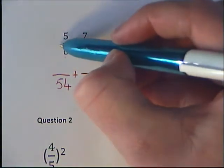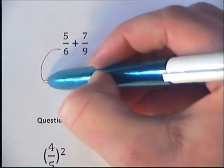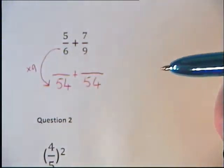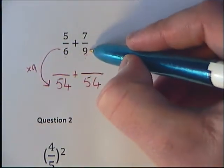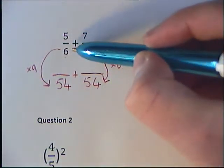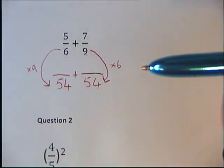And then we need to think, what do we times our 6 by on this fraction to get to 54? We times it by 9. What did we have to times our 9 by to get this 54? Again, we just times it by 6 because we multiplied our denominators together.